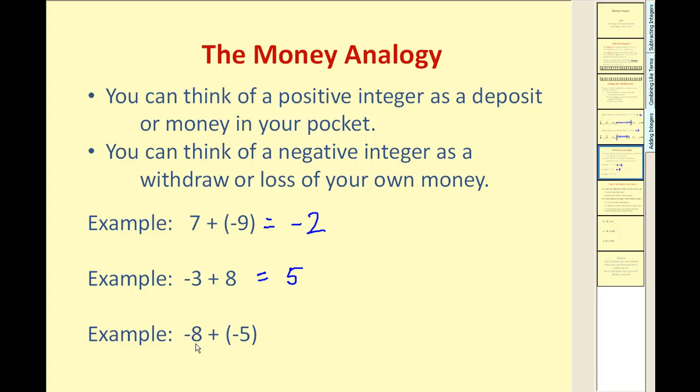This next example, negative eight plus negative five, you lose eight dollars. And then you lose five more dollars. You've lost thirteen dollars. The sum is equal to negative thirteen.